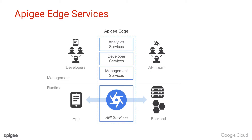Let's talk about what's in Apigee Edge — it's a single platform with three conceptual parts. API services allows us to expose and manage a service as an API. Developer services provides a portal where application developers or API consumers can learn about your APIs and request access to them. And analytics services lets you measure every aspect of your API program.